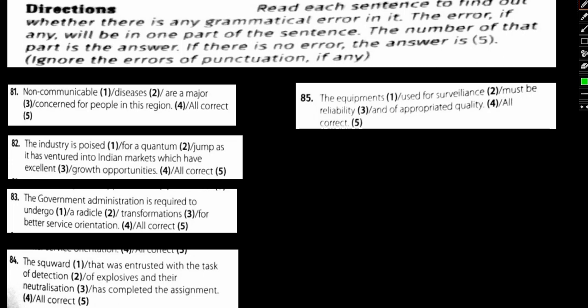We'll take a look at the approach, so that whenever we come across these questions further down the line in any examination, we are easily able to solve them. Let's focus on the question at hand. Read each sentence to find out whether there's any grammatical error in it. If the error is in any part of the sentence, number that part. If there is no error, then answer is 5. Ignore any punctuation errors. This is an error detection kind of question.